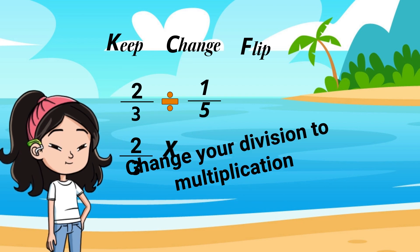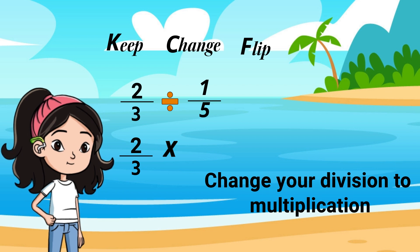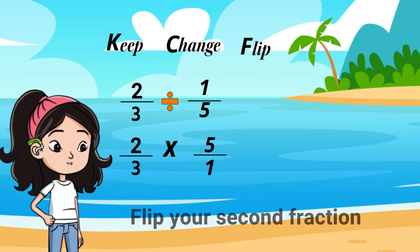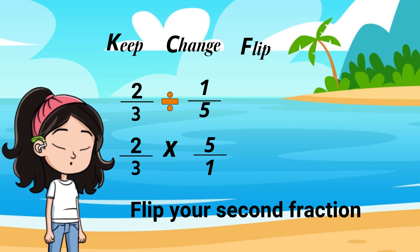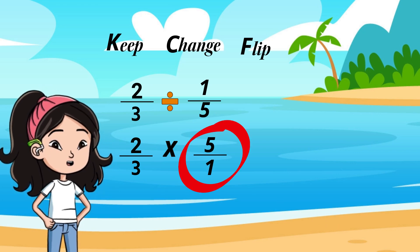Step 2. Change your division to multiplication. Step 3. Write the reciprocal of 1 fifth, which is 5 over 1. You only want the reciprocal of the second fraction.